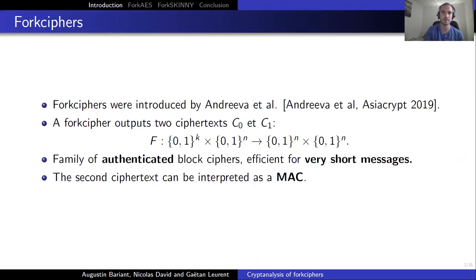This work is by Gaetan Leron, Nicolas David, and myself. The ForkCypher framework was introduced by Andre Van Hall in AzureCrypt 2019. A ForkCypher outputs two ciphertexts, C0 and C1, out of a single plaintext and a key. It forms a family of authenticated block ciphers because the second ciphertext can be interpreted as a MAC. It is efficient for very short messages as there are a lot of common operations between the computation of C0 and C1.